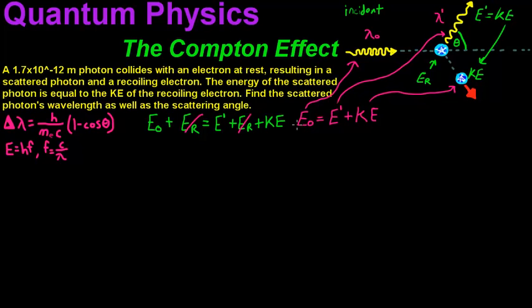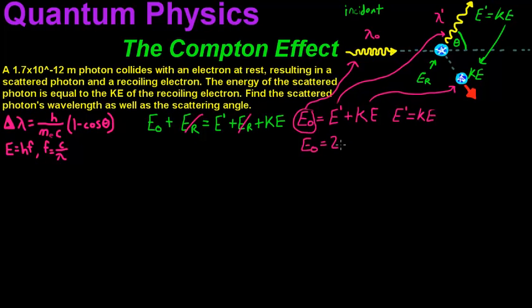Now let's break things down. We know the scattered photon's energy is equal to the kinetic energy of the electron. So since E₀ equals KE plus E_scattered, and E_scattered equals KE, this is the same as saying the incident photon's energy E₀ equals 2 times the scattered photon's energy. So E₀ equals 2 times E_scattered.